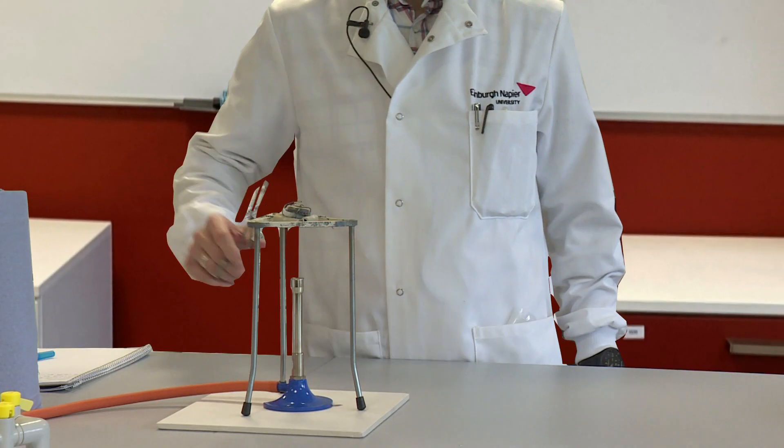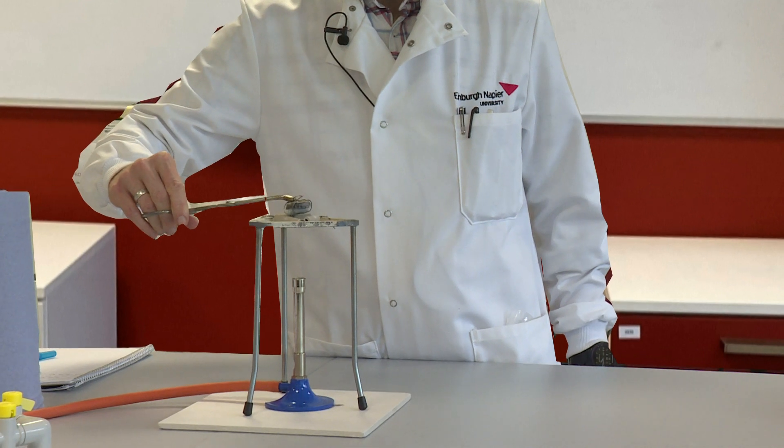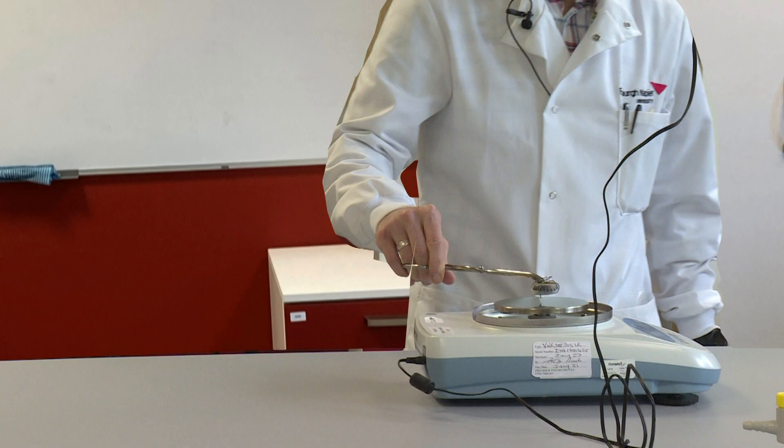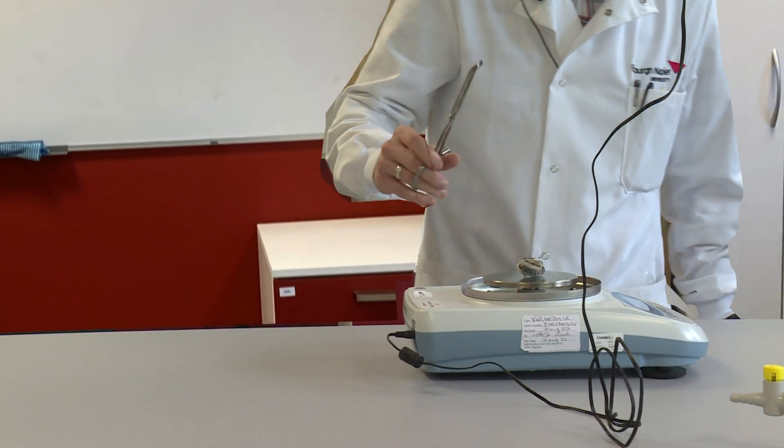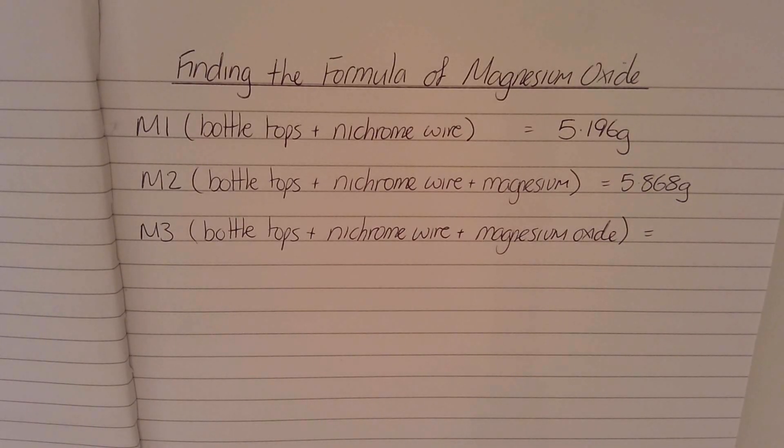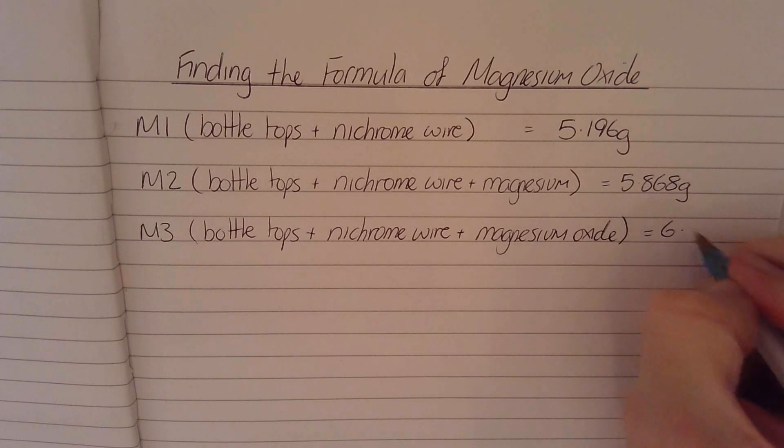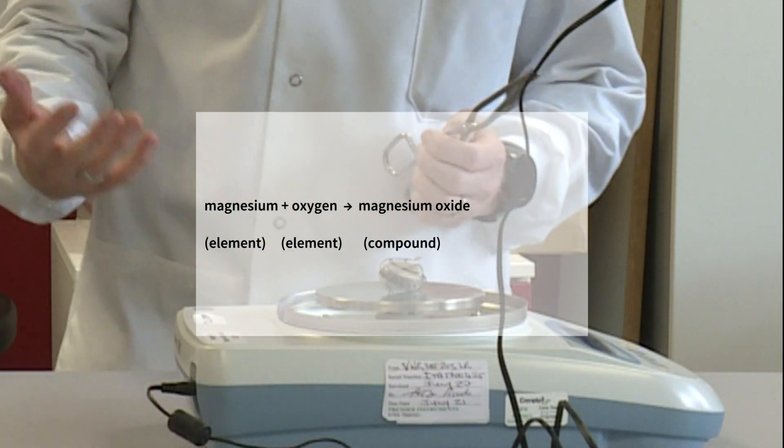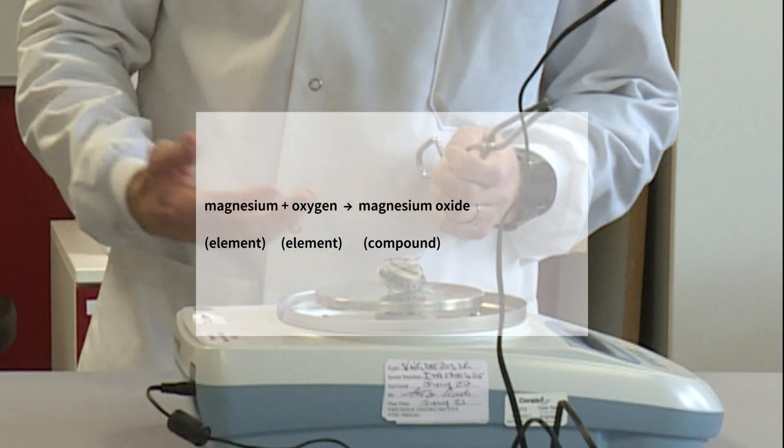If we now transfer the bottle tops and re-weigh them, the mass is now 6.332 grams. So as you can see, we've had an increase in mass. We started with 5.868 grams of magnesium, and once it's reacted with the oxygen in the air, it's now 6.332 grams.